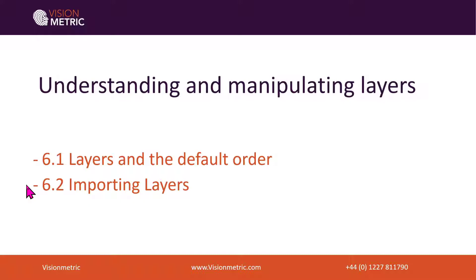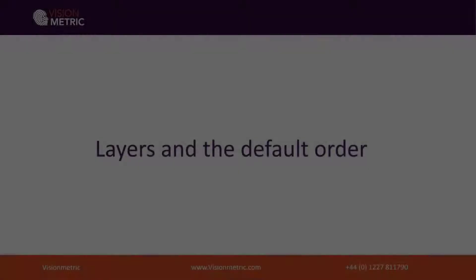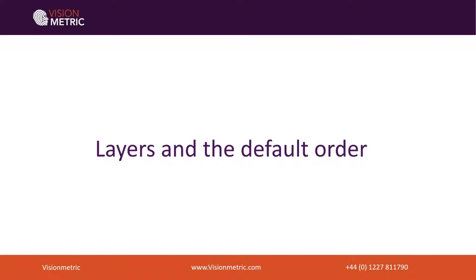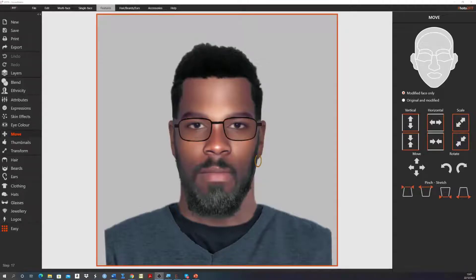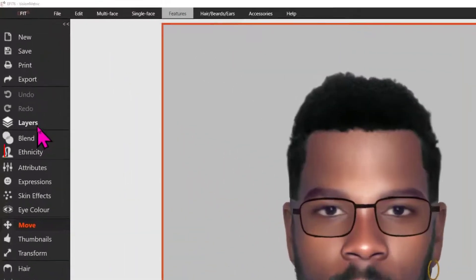Note that you can use the index in the notes below to directly access either of these specific sections. In this section of the lesson we're going to explain the use of layers within eFIT6 and how they are ordered. If we click on the layers icon, eFIT6 shows all the separate parts or layers that make up your eFIT image.